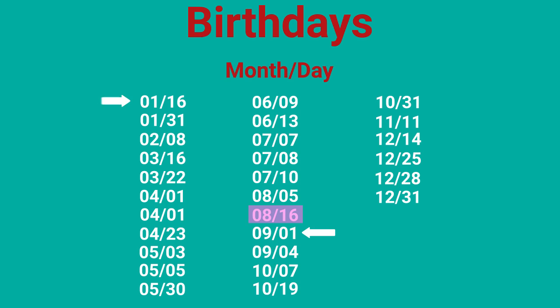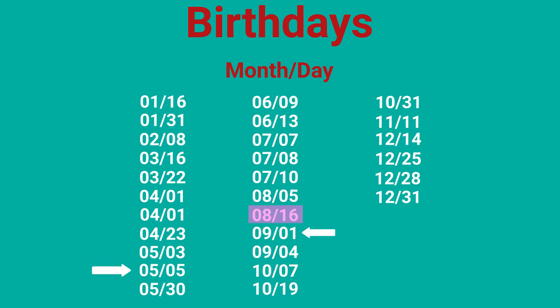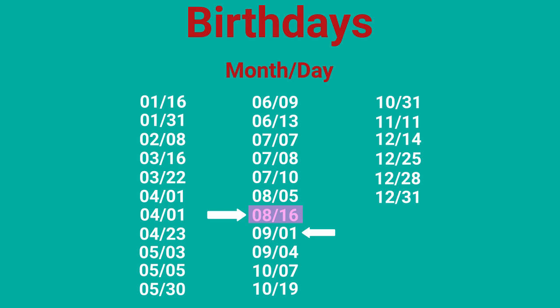You could find your birthday in this list by looking through the list from the beginning until you find your birthday. This is called a linear search and might take a long time, especially if a lot of your classmates have their birthday before yours.